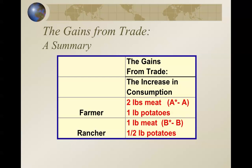So, as we can see, the farmer gets more meat and more potatoes, the rancher gets more meat and more potatoes, and both parties are better off in terms of the goods produced. This ends the second part of Mankiw.